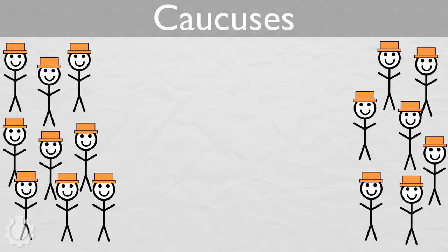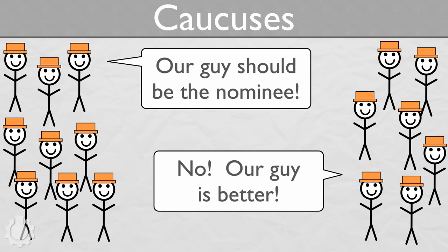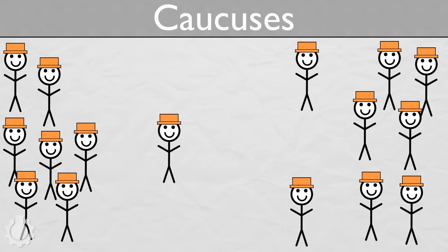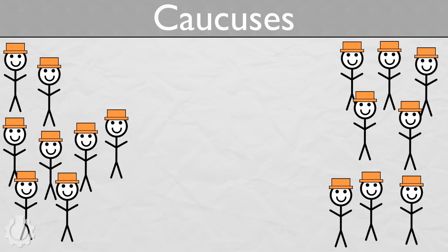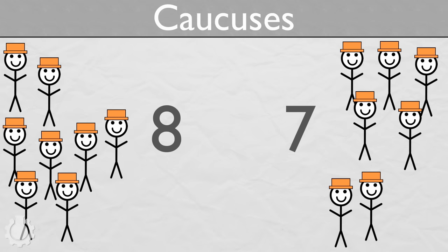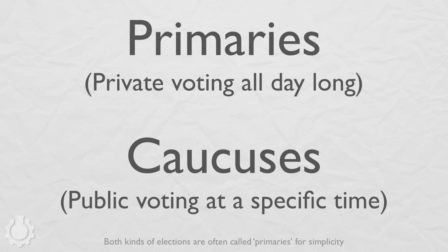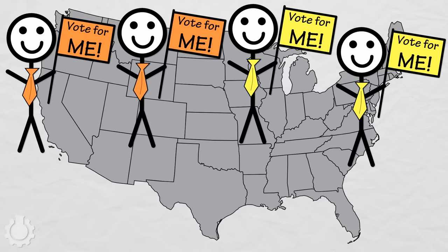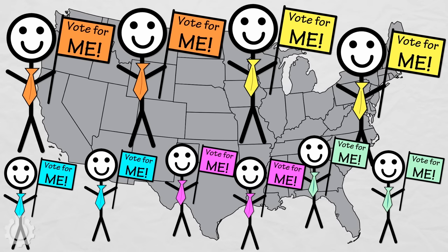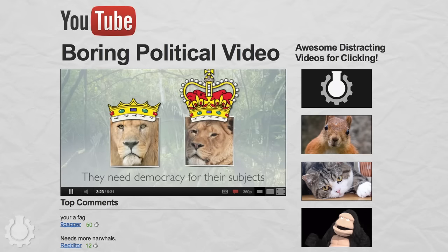In a caucus, people literally take sides in a room with everyone else who likes the same candidate. The groups debate each other, and if people change their minds, they need to physically switch sides. At the end of the debates, the party representatives count the number of people in each group. If you leave too early, your vote doesn't count. The specifics can vary wildly — there are 50 states, all of which hold at least two primaries and caucuses for the big parties and possibly more for the small parties.